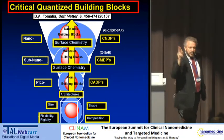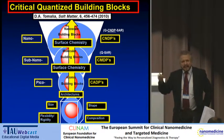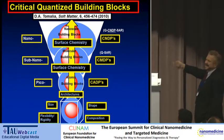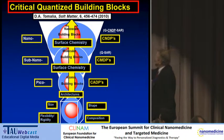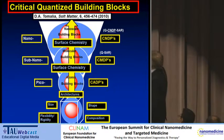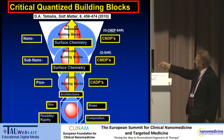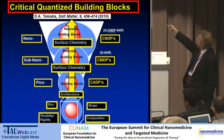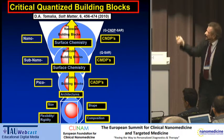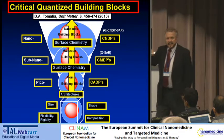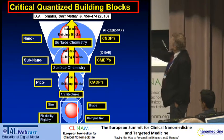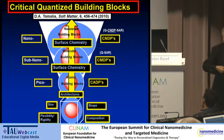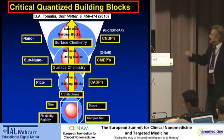Very quickly, two concept slides before we get into the practical clinical part. I like to think of the organization of our hierarchy from the atomic level to the nanoscale level in terms of the so-called critical quantized building blocks. There are six critical design parameters associated at each level: the atomic level, the molecular level, and the nanoscale level. At the molecular level, if you've been designing drugs or pharmaceuticals, we refer to the manipulation of those six design parameters as QSAR.